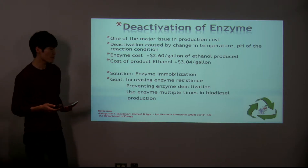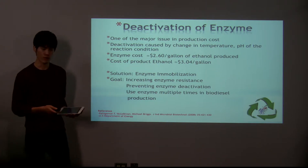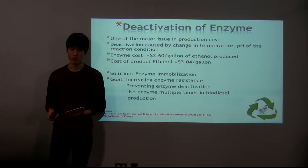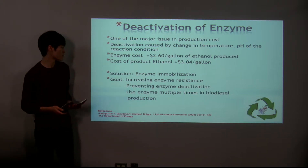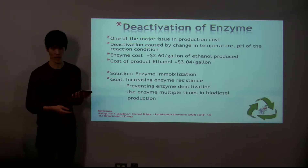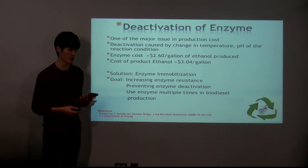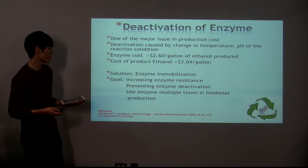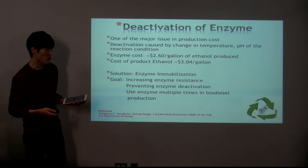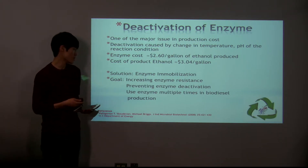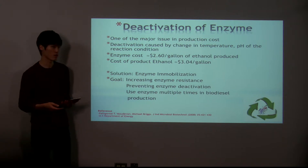The deactivated enzymes undergo extra processing for reactivation, or are simply discarded. As you can see in the slide, the net profit of the product ethanol is not very high due to the high cost of enzyme. So how do we reduce the cost of enzyme? The solution is enzyme immobilization.